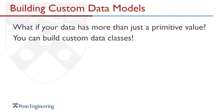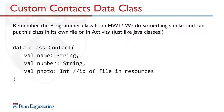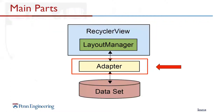What if your data has more than just a primitive value? You can build custom data classes. Similar to the Programmer class from homework 1, we can make a data class called Contact that holds a name, number, and a photo. The photo is stored as an Int because it's the ID of a file in resources. This data class can be put in its own Kotlin file or inside the same file as our main activity class.